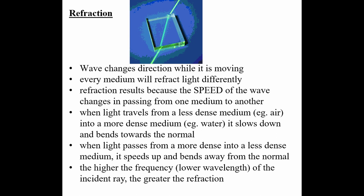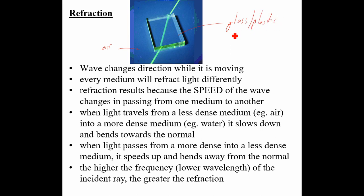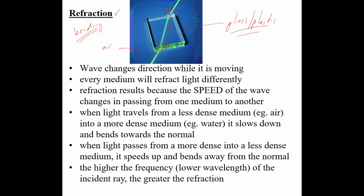Refraction is another property of light. In the picture at the top, a green laser beam travels through air and passes into a solid block — glass, plastic, or another transparent material. The light doesn't continue on the same path but actually bends as it enters the block, and bends again when it exits back into air. This bending as light moves between materials of different density is what we call refraction.